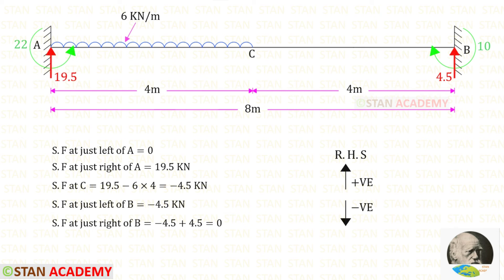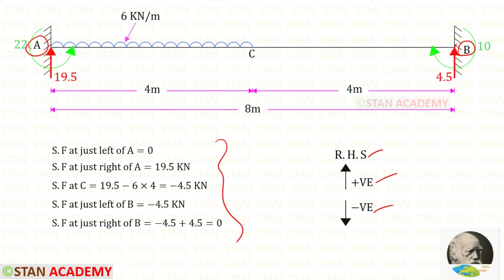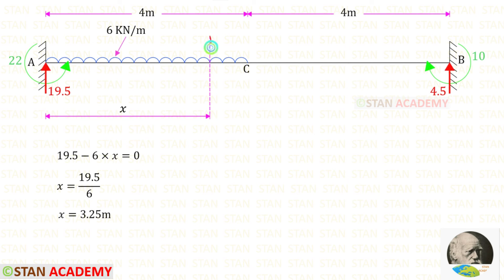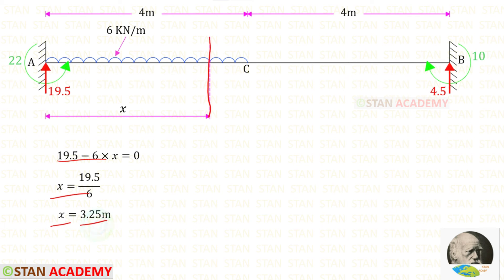Now we can draw the shear force diagram. Finding shear force values from point A toward point B using the right-hand side rule: upwards is positive and downwards is negative. At the point where the shear force becomes zero, there will be the maximum positive bending moment. Making a section at distance x from point A and using the zero shear force condition, we get x equals 3.25 meters.